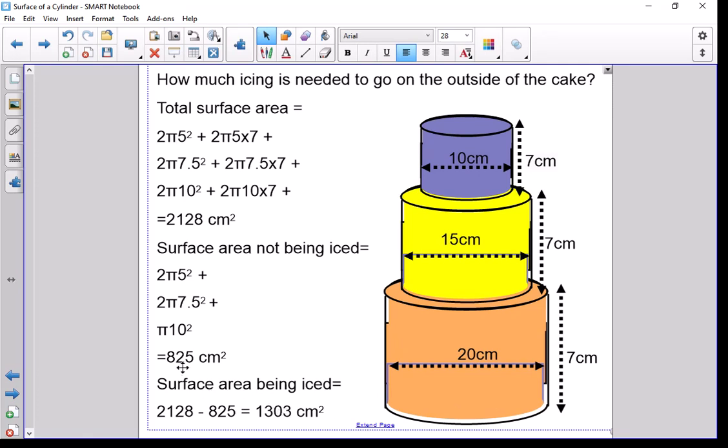So if we're looking for the surface area being iced, it'd be the total surface area of the whole lot, take away what we can't see. So 2,128 take away 825 means we've got 1,303 centimeters squared of icing being used around the outside of the cake.